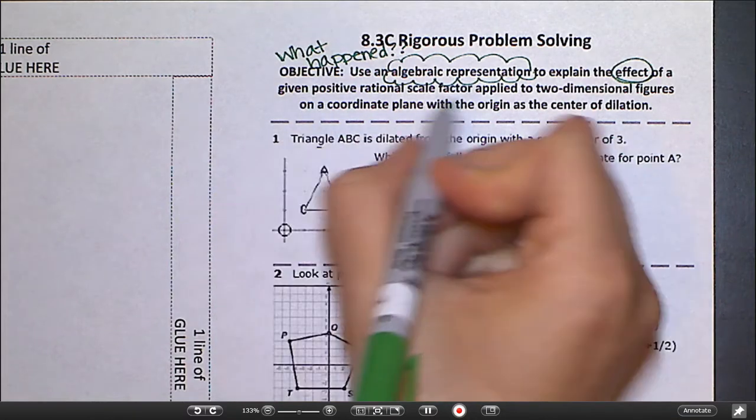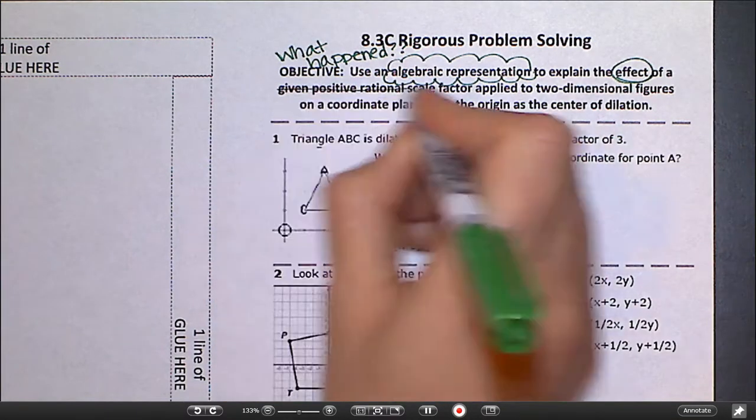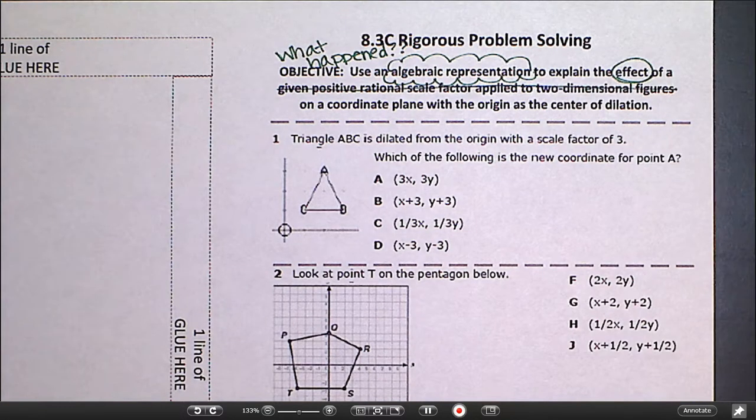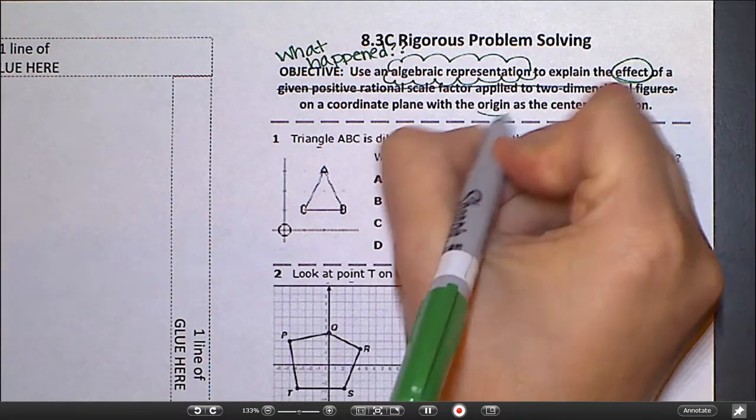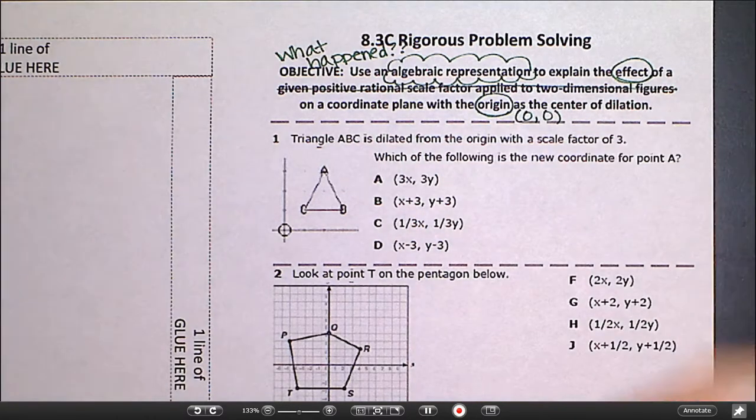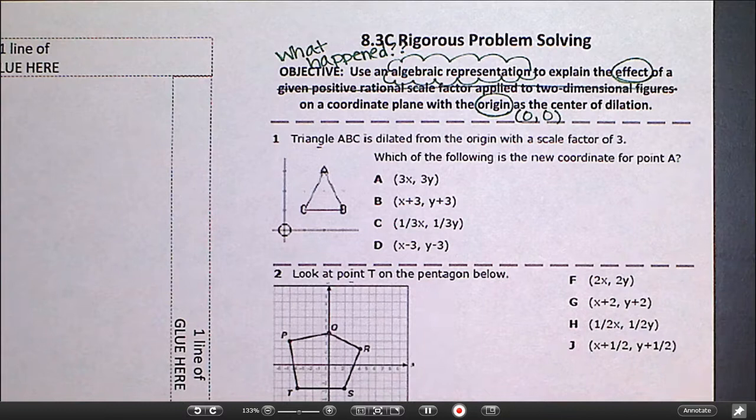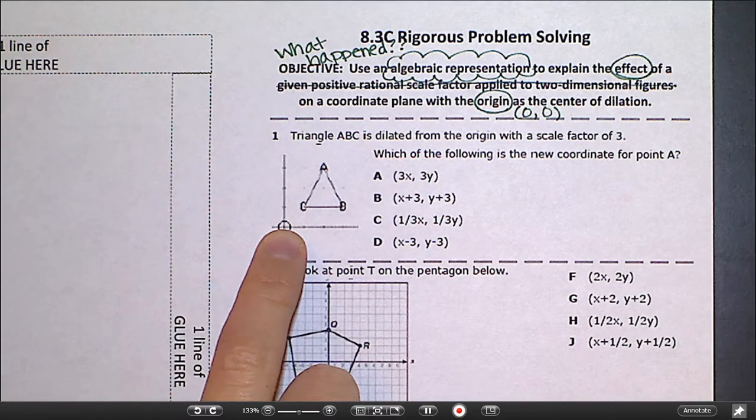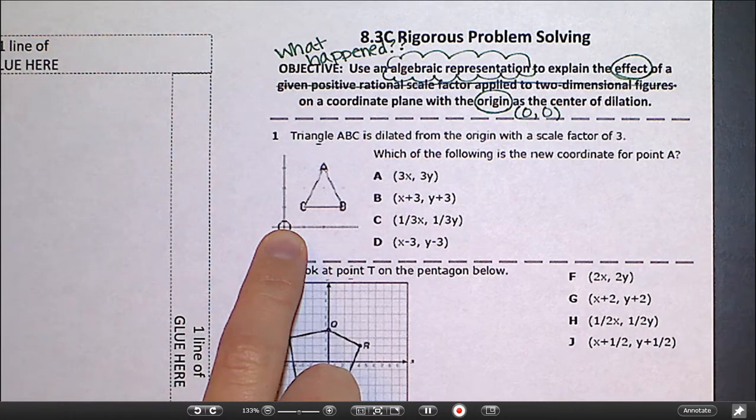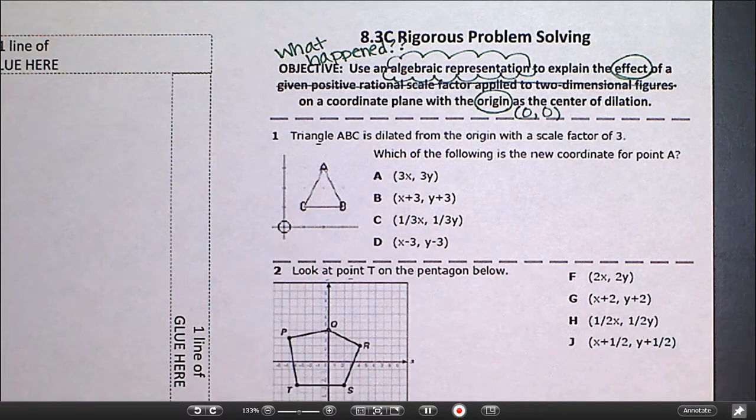So this part, given positive rational scale factor applied to two-dimensional figures, we don't need all of that because that's all we use. So the effect of a dilation with the origin, that's (0,0), as the center of dilation. That's important right there. Everything we do this year with dilations will have the origin as the center of dilation. That makes this actually really easy because I'm just going to do the same thing to x and y when we're dilating a figure and we just do whatever the scale factor is. So it's super easy.